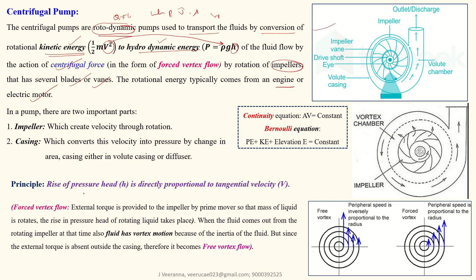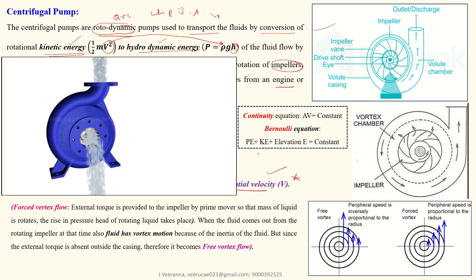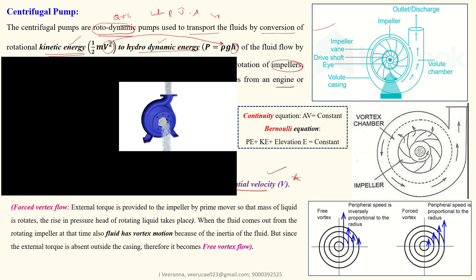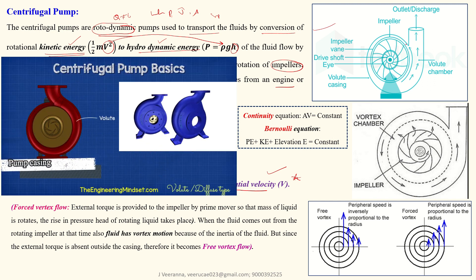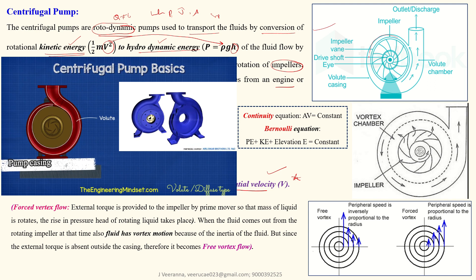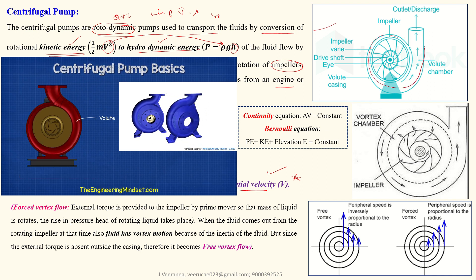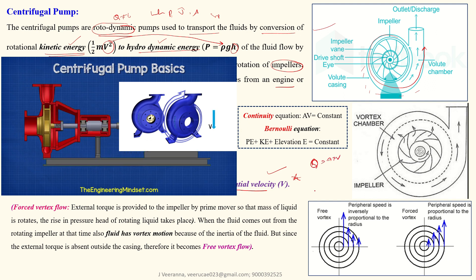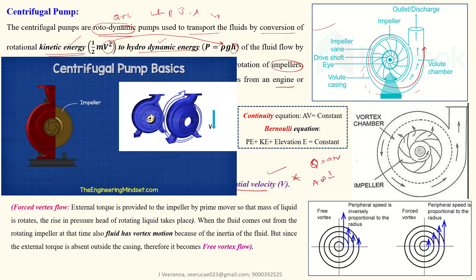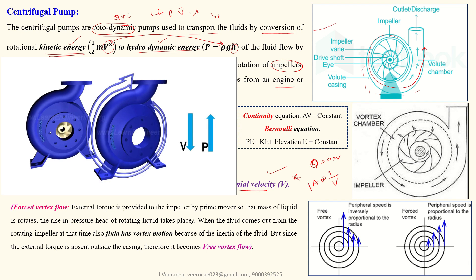To summarize: the rise in pressure is directly proportional to tangential velocity. Looking at the diagram, the casing area gradually increases toward the outlet with no other outlet sections. From the continuity equation, Q = A × V, so area is inversely proportional to velocity — when area increases, velocity reduces.